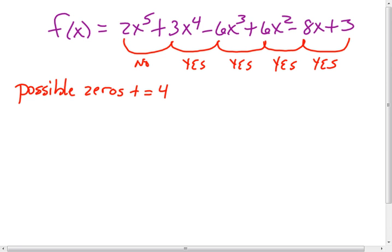Now to do the negative, we have to find f of negative x. So for all the x's we have, we're going to replace it with a negative x, and then rewrite the function, and then find the sign changes.